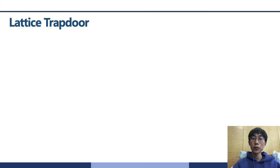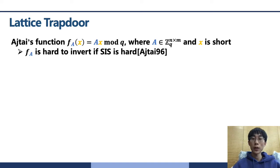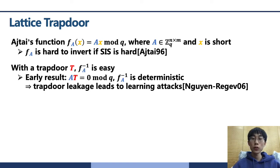Many advanced lattice cryptosystems rely on strong lattice trapdoors. Ajtai's function is defined by the matrix A, with short vectors with uniform entries mod q, and the domain X is a set of short integer vectors with small entries. In Stoc 96, Ajtai proved that if SIS is hard, the function fA is hard to invert. But with a trapdoor, the function is easy to invert. In the early result, it generated the short lattice basis T as a trapdoor. However, the deterministic process of inversion leaks the information about trapdoor, leading to learning attacks.